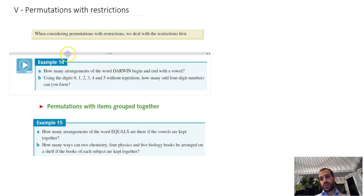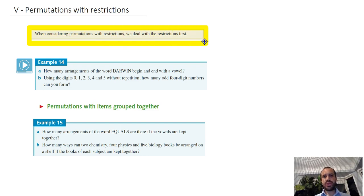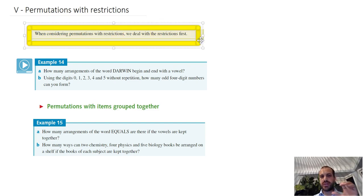Alright, so this time we're going to do permutations with restrictions. I'm hoping this is going to be a quick video. Now something we maybe didn't talk about, and really the key to the whole thing is this: when considering permutations with restrictions, we deal with the restrictions first.